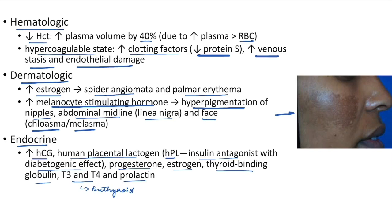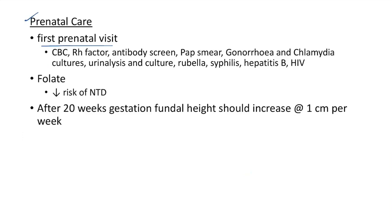In the first prenatal visit, the following tests should be done: complete blood count, Rh factor, antibody screen, Pap smear, gonorrhea and chlamydia cultures, urinalysis and urine culture, rubella, syphilis, hepatitis B, and HIV. Folate supplementation will help reduce the risk of neural tube defects. After 20 weeks gestation, the fundal height should increase at the rate of 1 centimeter per week.